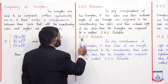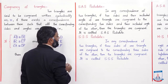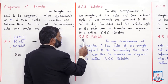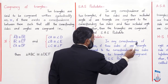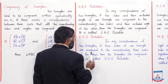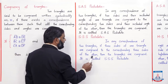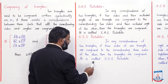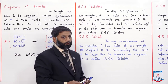Uske baad SSS postulate hai. Yahaan pe teeno sides ek triangle ki corresponding sides of the other triangle ke equal hongi. In any correspondence of two triangles, if three sides of one triangle are congruent to the corresponding three sides of the other, then the triangles are congruent. It is called SSS postulate.